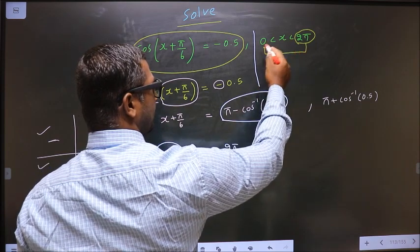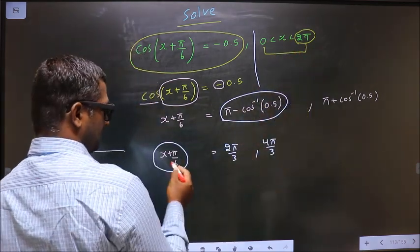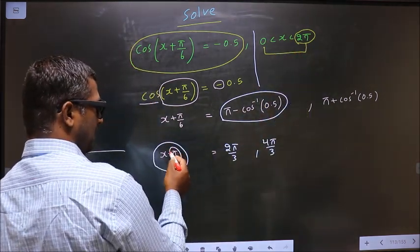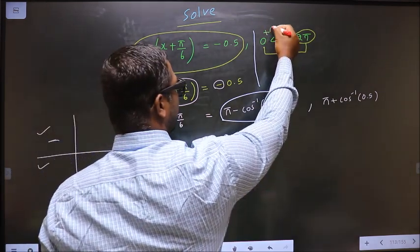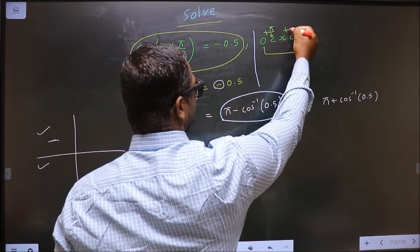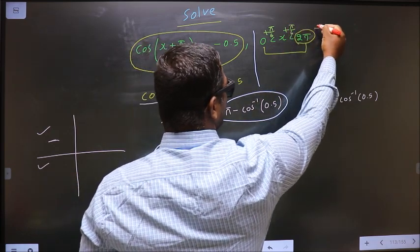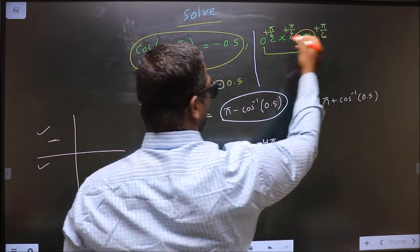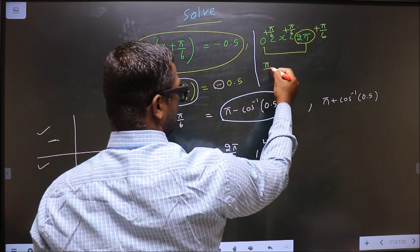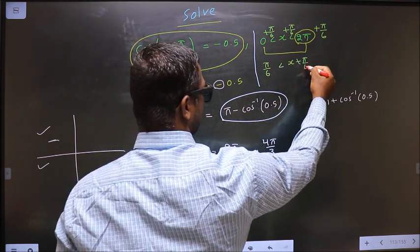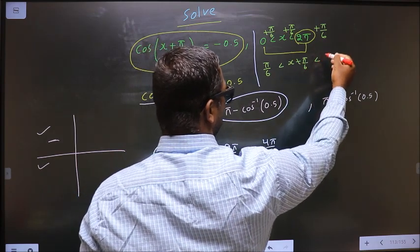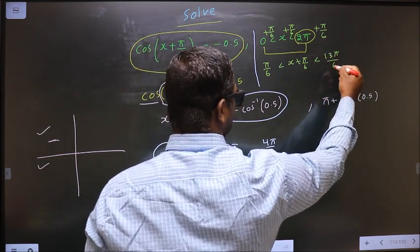Here x lies in the interval 0 to 2π. Here we have x + π/6. So what I do is I add π/6 everywhere. So we get π/6 < x + π/6 < 2π + π/6 = 13π/6.